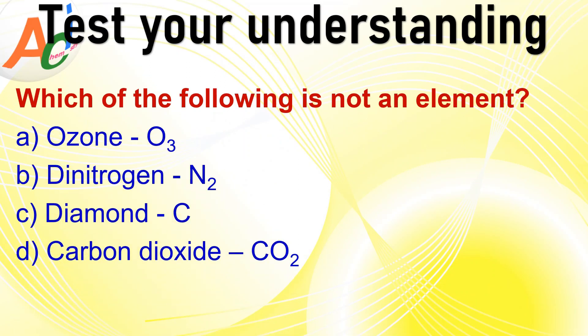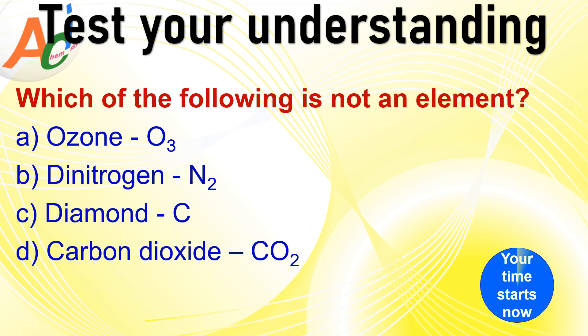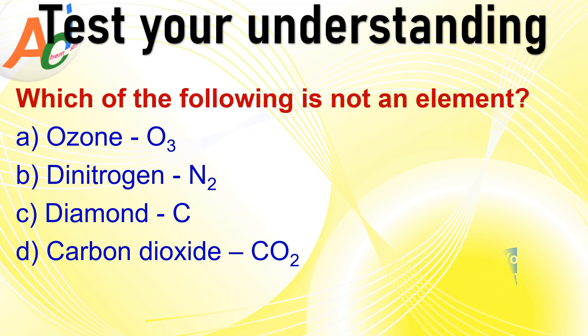Now, test your understanding. Which of the following is not an element? Four options are given: O3, dinitrogen N2, diamond represented by C, and carbon dioxide CO2. The correct option is D, carbon dioxide. Carbon dioxide is not an element — it is a compound composed of two different elements: carbon and oxygen.